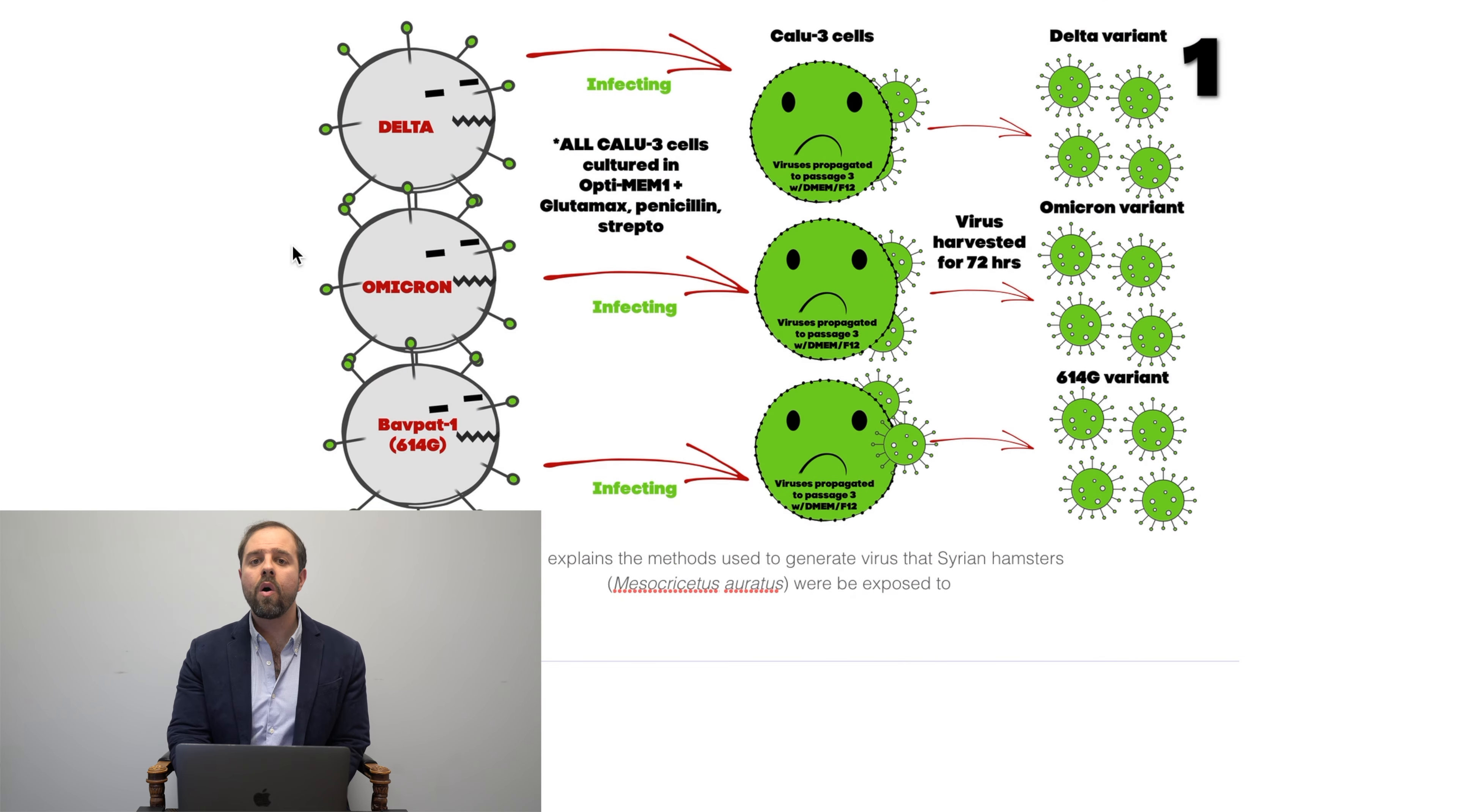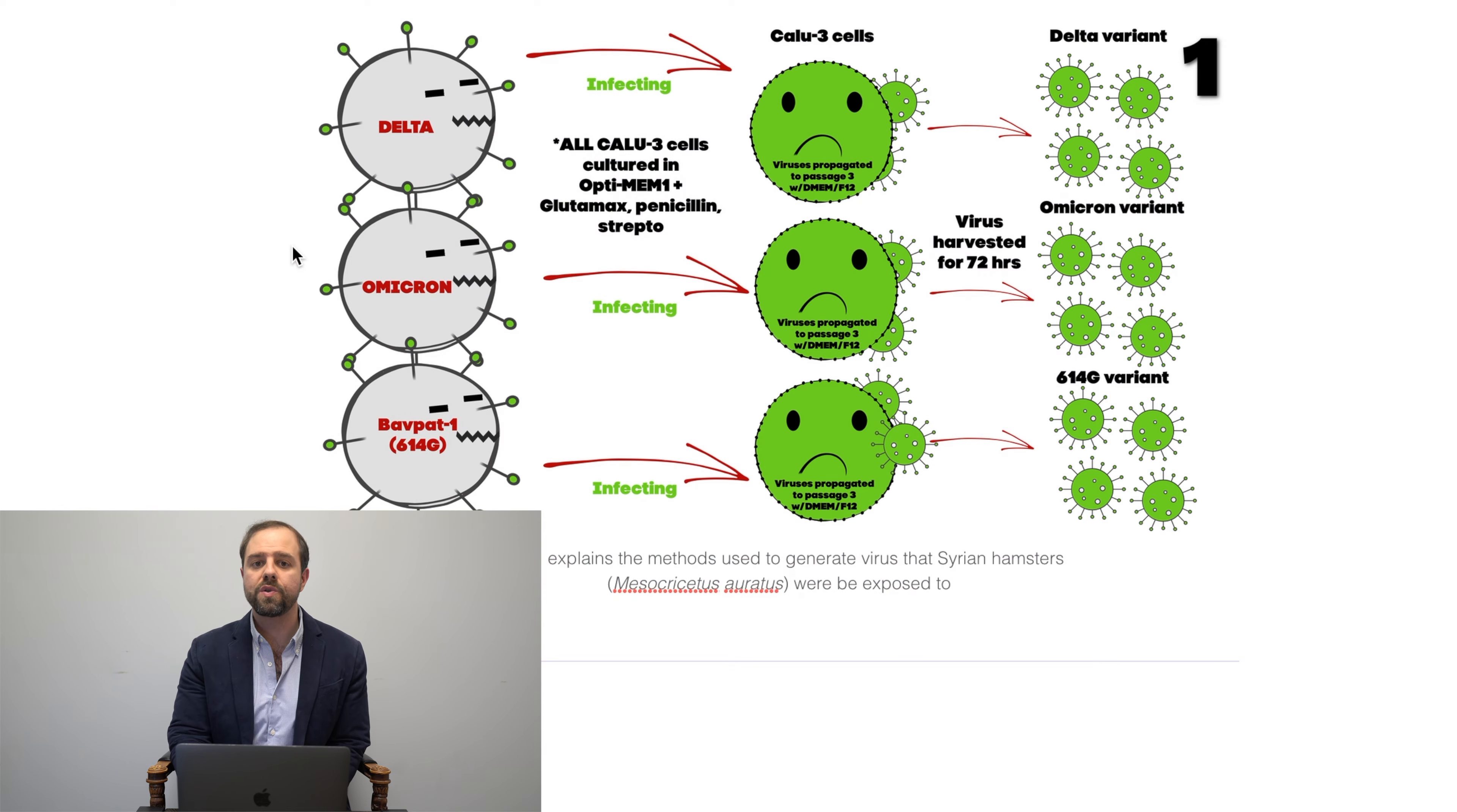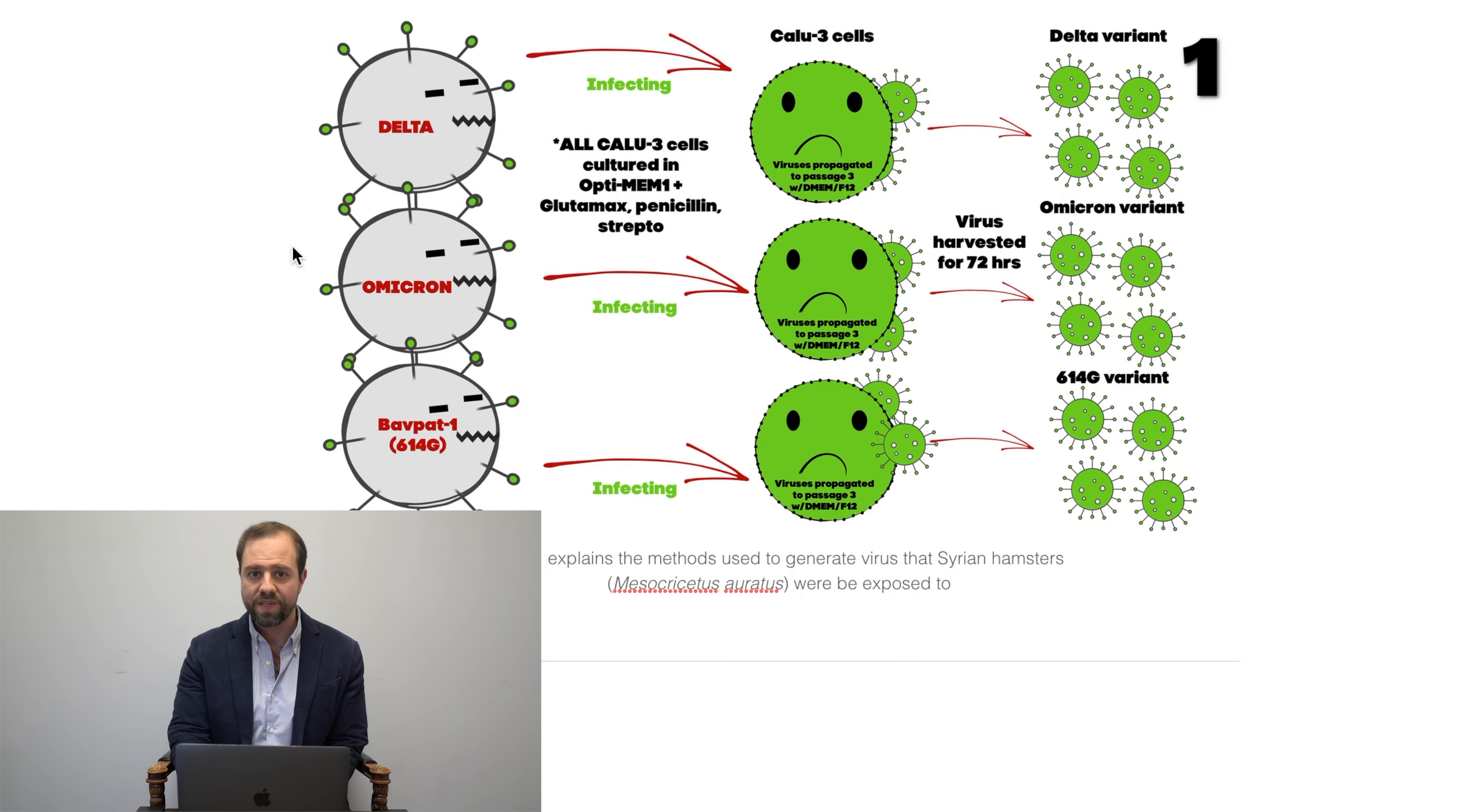Finally, those infected cells, those green ones in the middle were harvested for 72 hours after infection. Now, the row on the far right is the final result. Essentially, they're different strains of SARS-CoV-2 researchers will use to infect the hamsters. Now, let's go to the next slide.